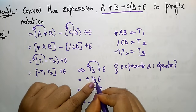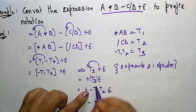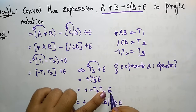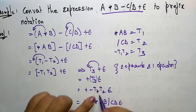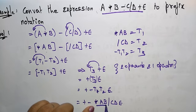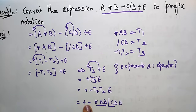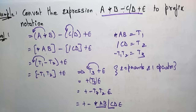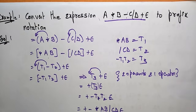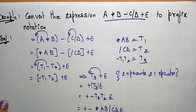Our complete expression is converted into two operands and one operator, so prefix it: plus T3 E. Now substitute the temporary variables. T3 is nothing but minus T1 T2, so: plus minus T1 T2 E. Now substitute T1 and T2: T1 is star A B, and T2 is division C D. These are already converted into prefix, so substituting directly gives the final prefix expression.